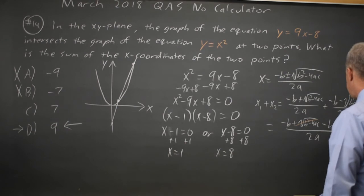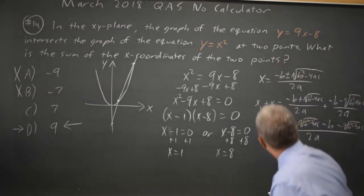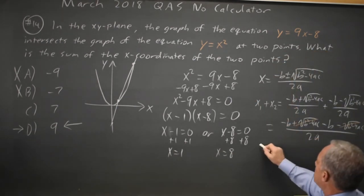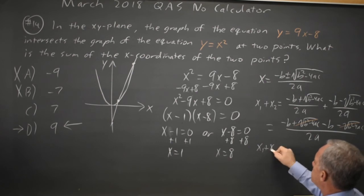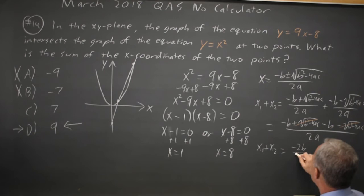The two square roots cancel. So I'm left with x1 plus x2 equals negative 2b over 2a.